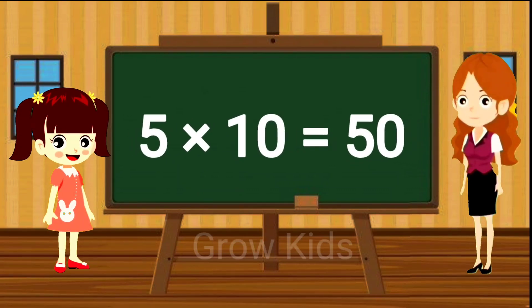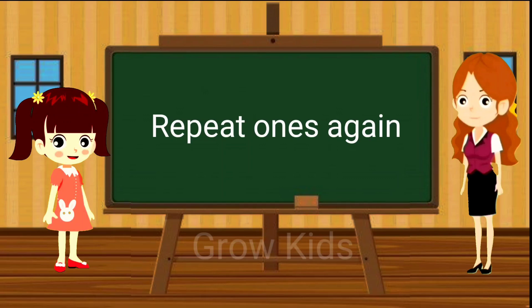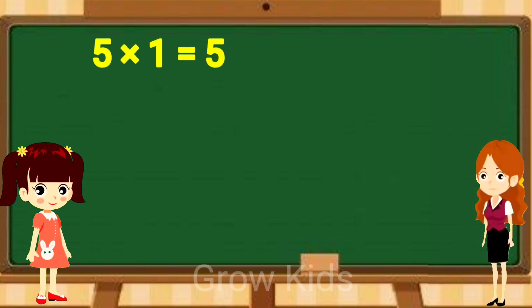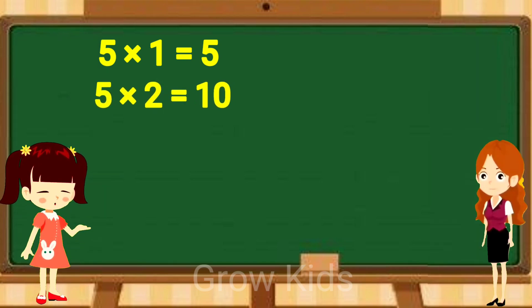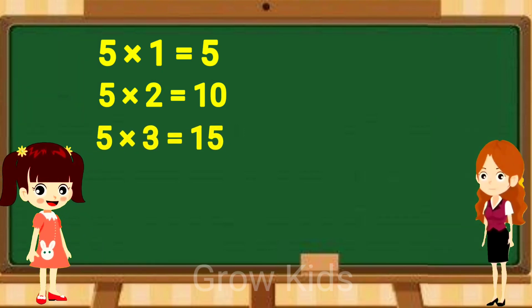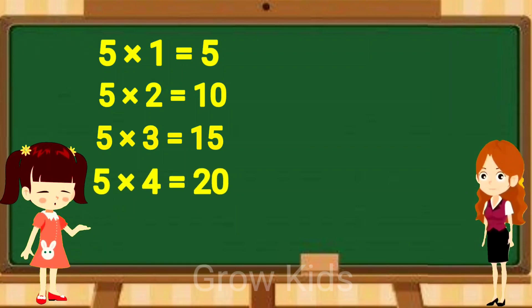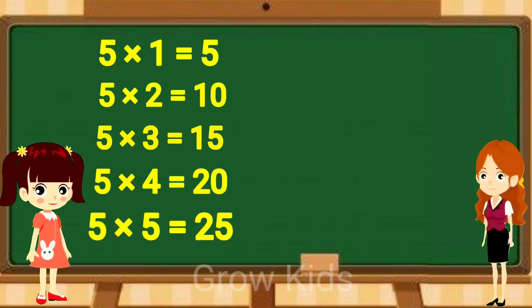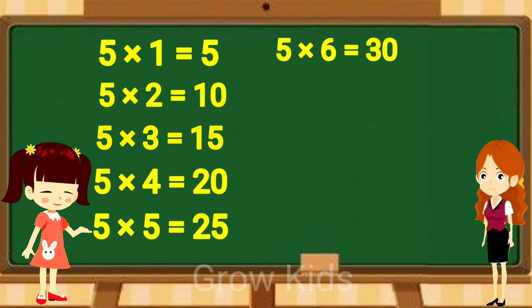5 tens are 50. Repeat once again. 5 ones are 5. 5 twos are 10. 5 threes are 15. 5 fours are 20. 5 fives are 25. 5 sixes are 30.